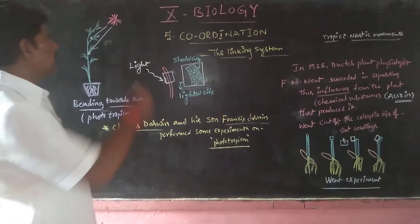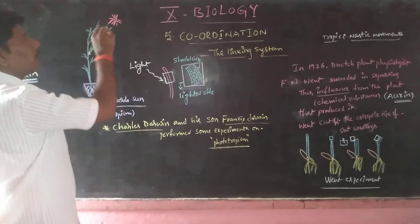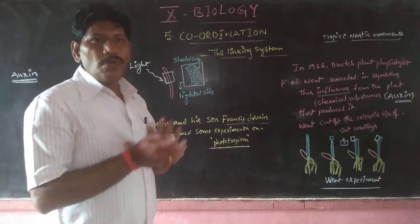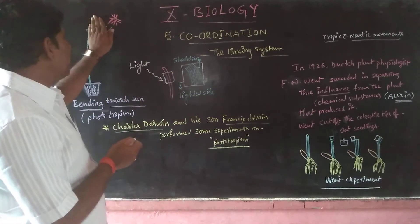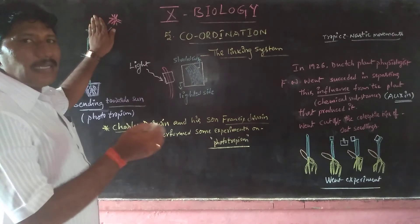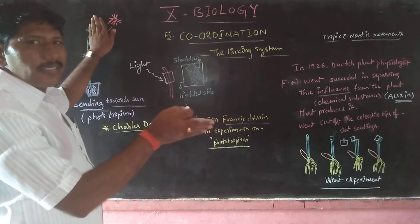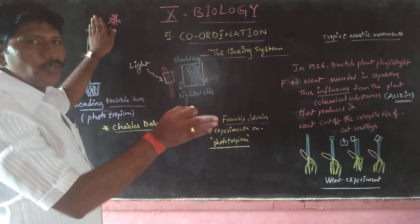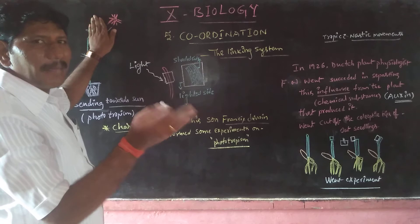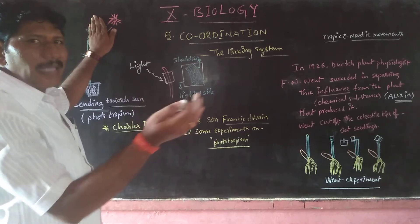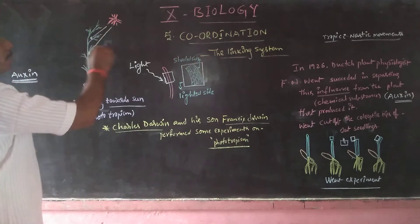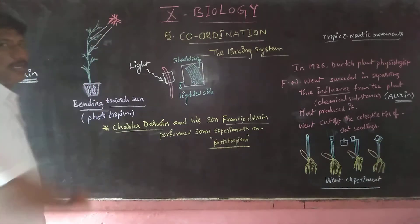First, they covered the tip of the plant with a metal foil, which means they did not allow light to reach the tip. When the metal foil covered the tip, light could not penetrate through that portion. So there was no bending. The plant did not bend towards the light because the light could not penetrate past the metal foil.